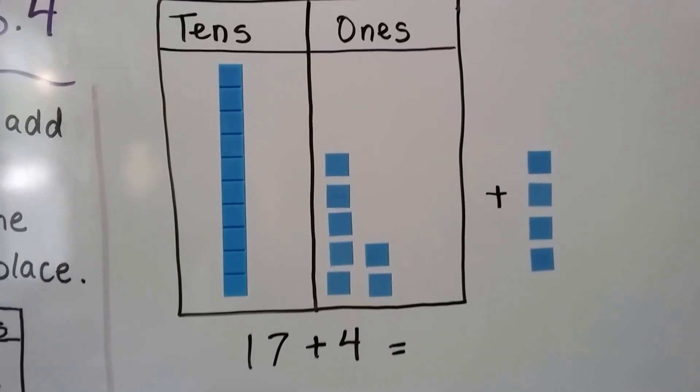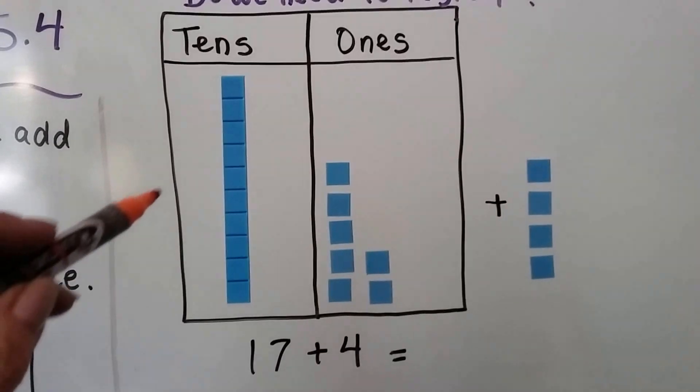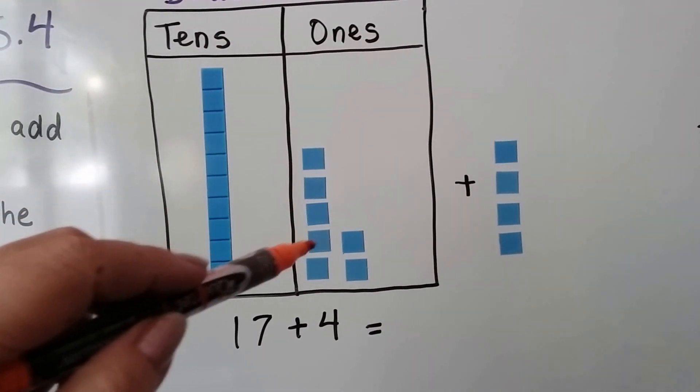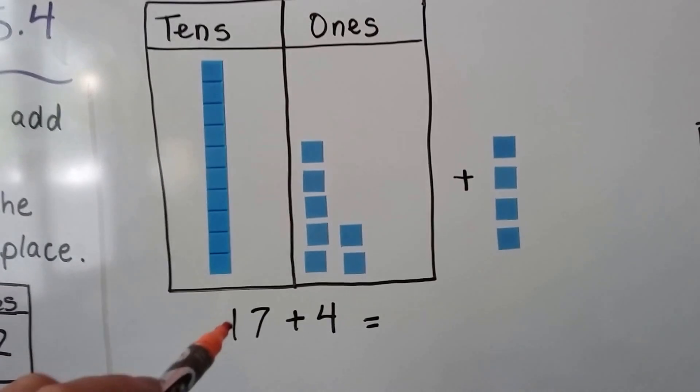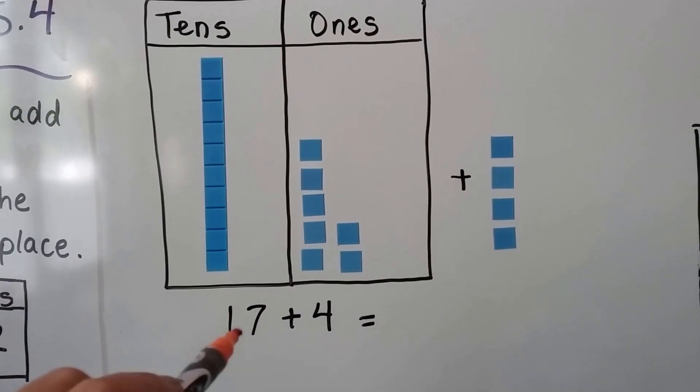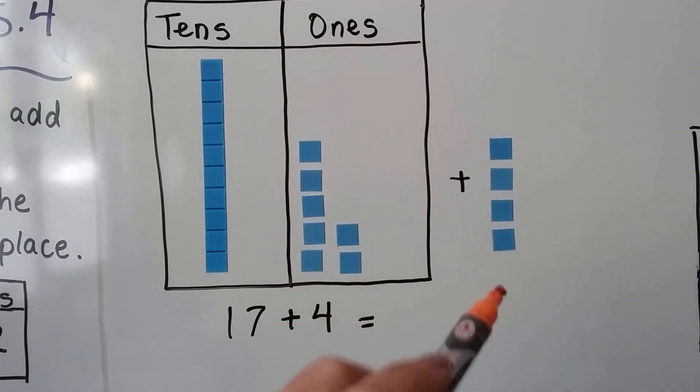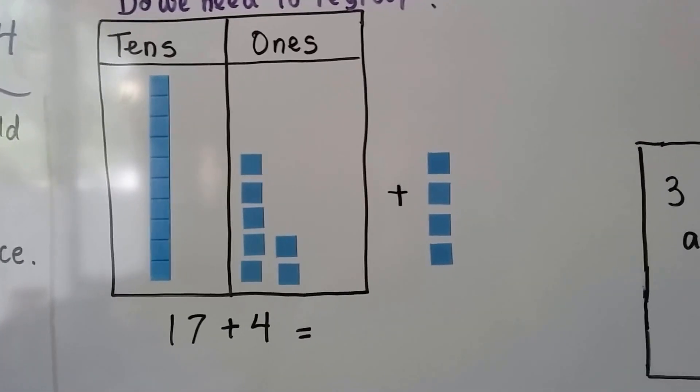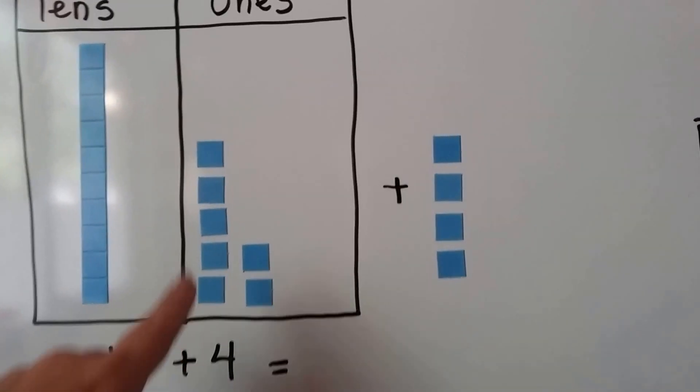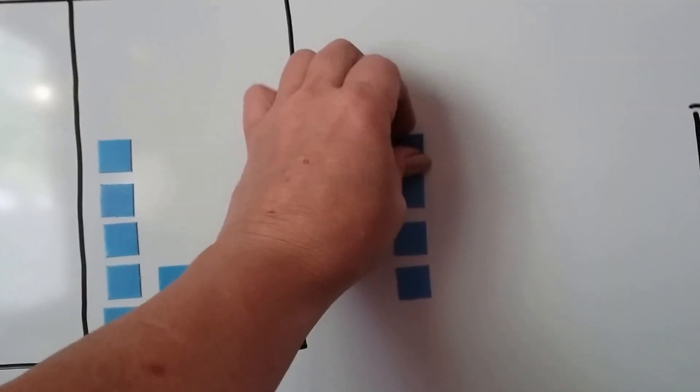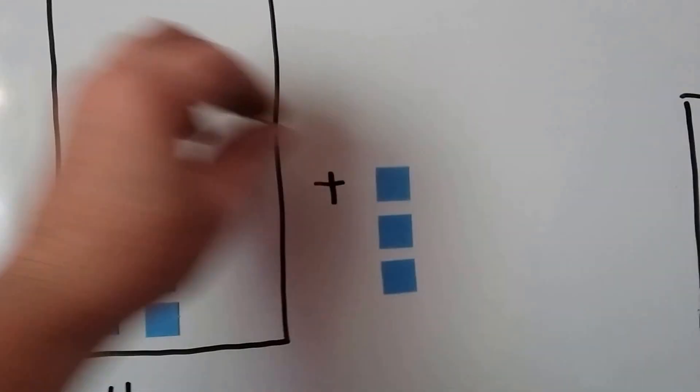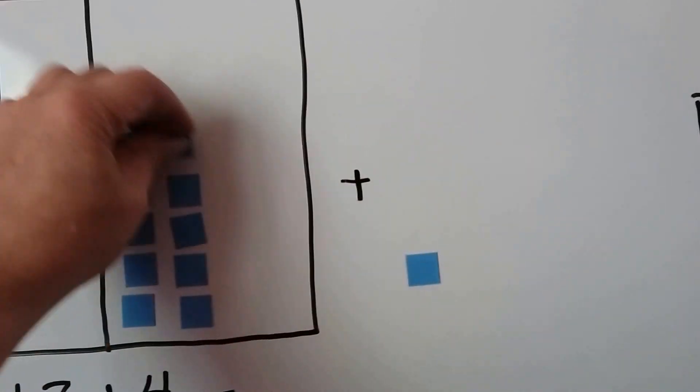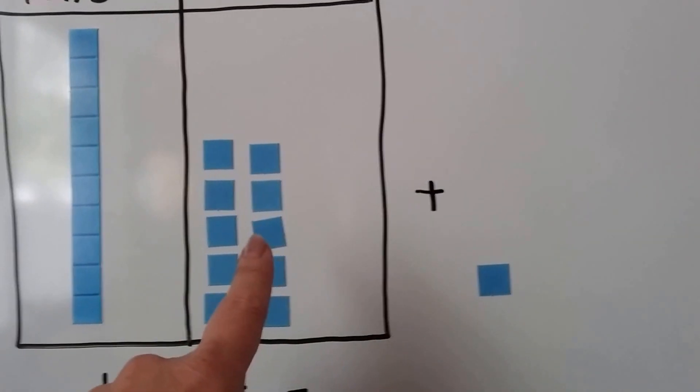Let's look at this one. We have a 10 and 1, 2, 3, 4, 5, 6, 7 ones. We have a 17. We want to add 4. We're at 17, and do we need to regroup? Well, let's add them. If this is 7, we can make 8, 9, 10. Now we have 10 here.